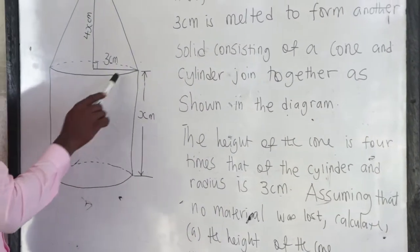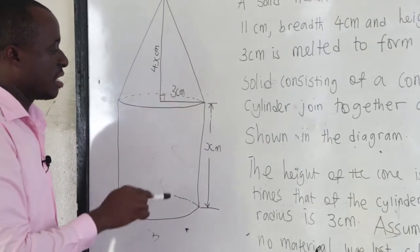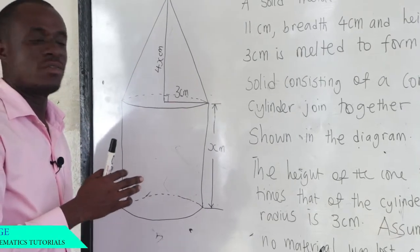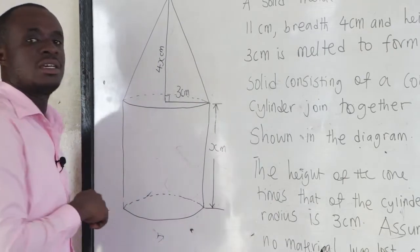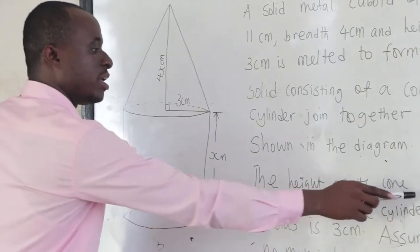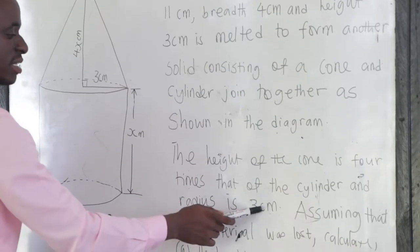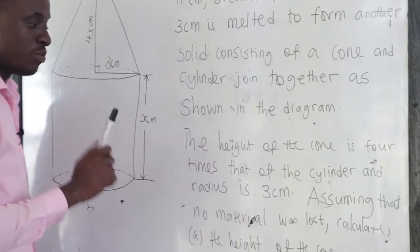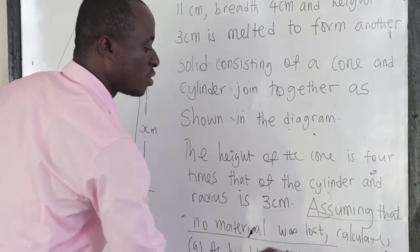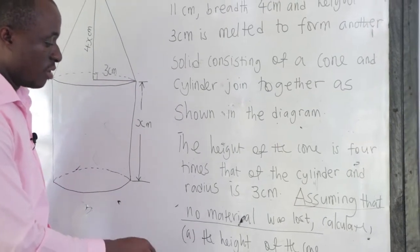We let the height of the cylinder be x, and since the height of the cone is four times that of the cylinder, the height of the cone is 4x. The radius is given as 3 centimeters. Importantly, no material was lost in the melting process.